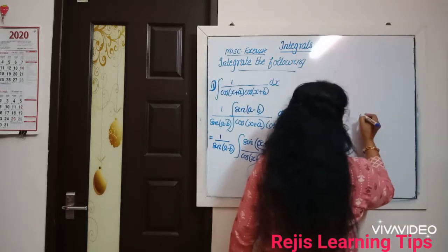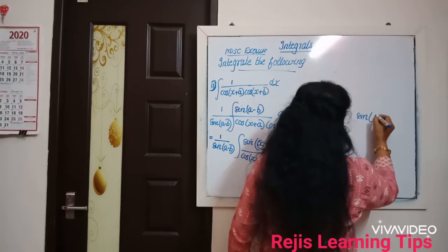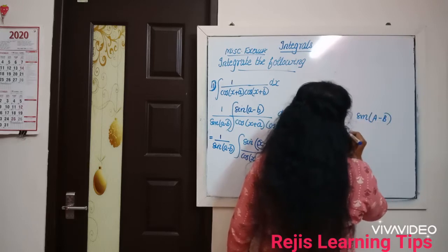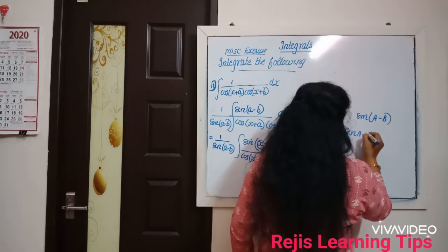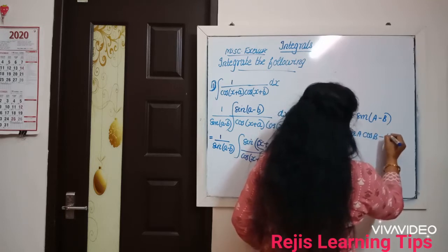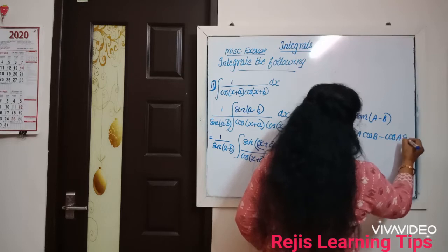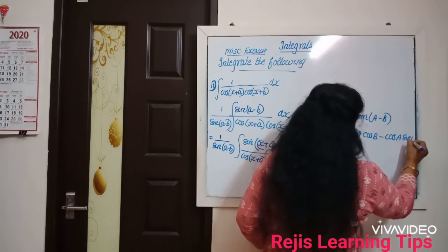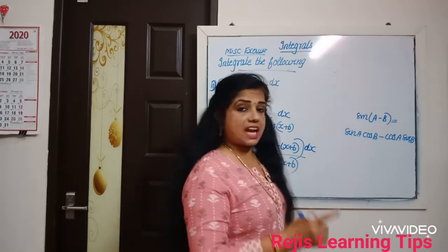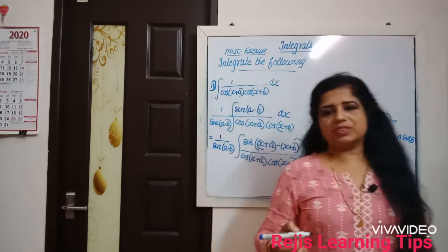Now let us recall: sin(a minus b) means sin a cos b minus cos a sin b. So sin(a minus b) is equal to sin a cos b minus cos a sin b. Understood?